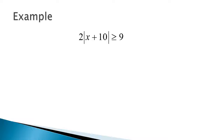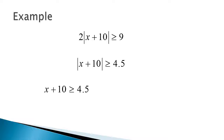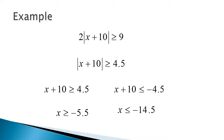Try this one — notice you have a 2 on the outside of the absolute value. Think about what you need to do first. First, divide by the 2. Then do one part of the inequality: x plus 10 is greater than or equal to 4.5. Subtract 10 from both sides. Then do the second inequality: x plus 10 is less than or equal to negative 4.5, and I get x is less than or equal to negative 14.5. This is going to be an 'or': x is either less than or equal to negative 14.5, or it's greater than or equal to negative 4.5.